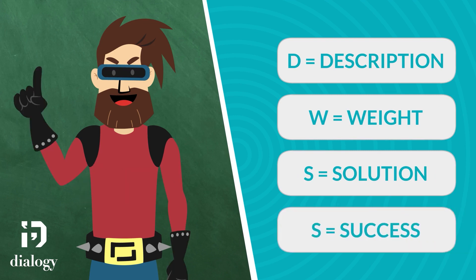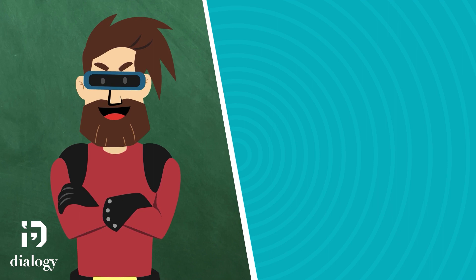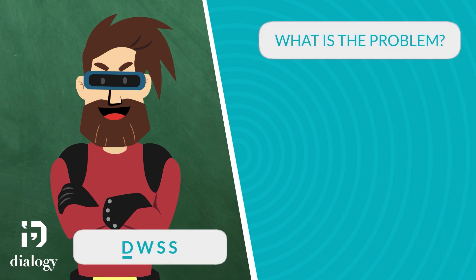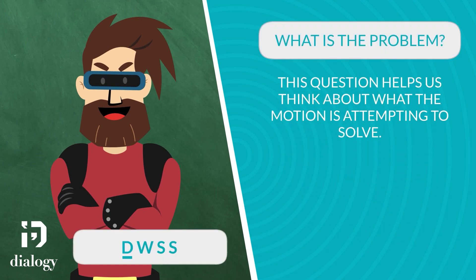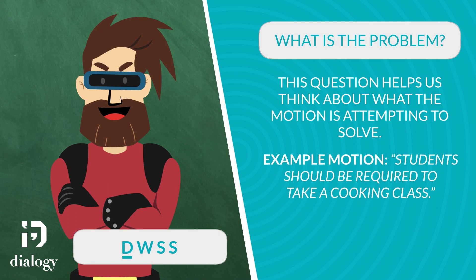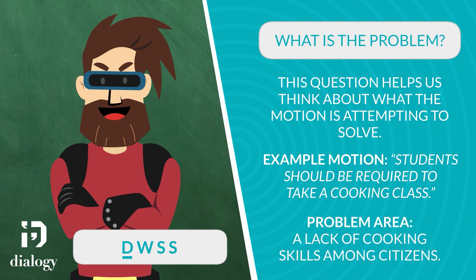Our first question — what is the problem — asks us to think about what the motion attempts to solve. For example, if we debated the topic 'students should be required to take a cooking class,' one problem area of the motion is a lack of cooking skills among citizens.